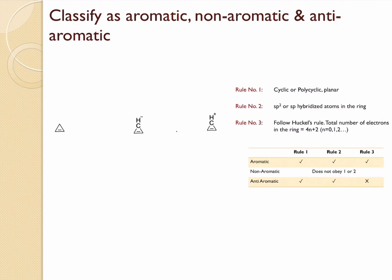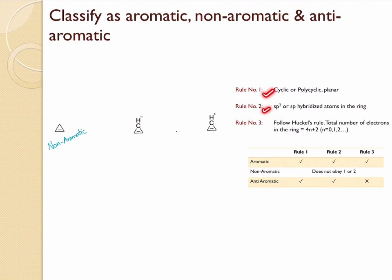Among three additional structures: the first has an sp3 carbon — although cyclic, rule two is disobeyed — so it is non-aromatic. The second is cyclic, satisfying rule one. All atoms are sp2 hybridized, and the carbocation can make itself sp2 hybridized by donating electrons to the ring, satisfying rule two. However, it has only two electron pairs — a 4n system — so it is anti-aromatic.